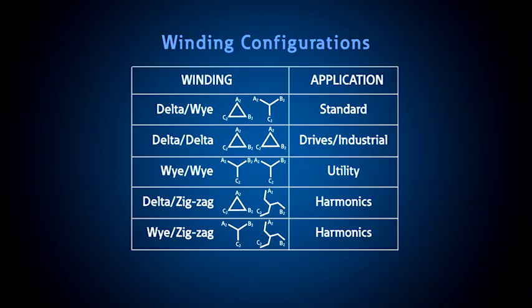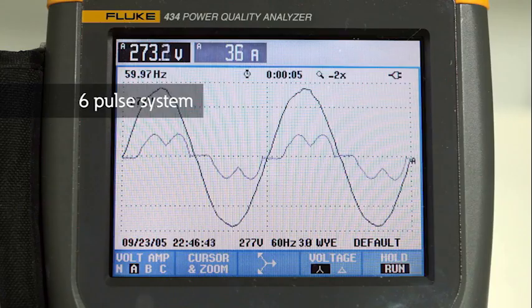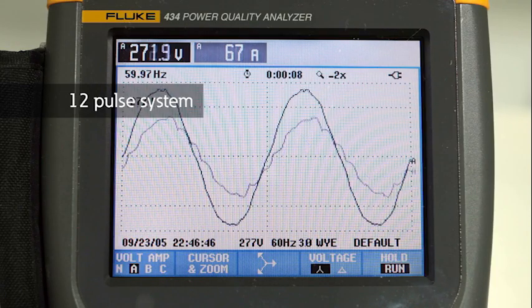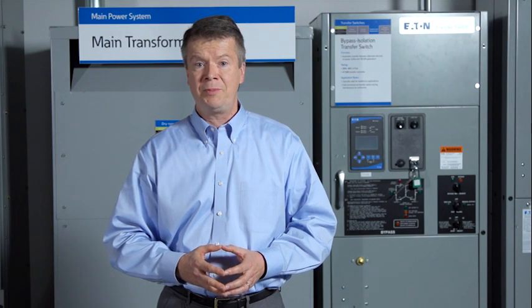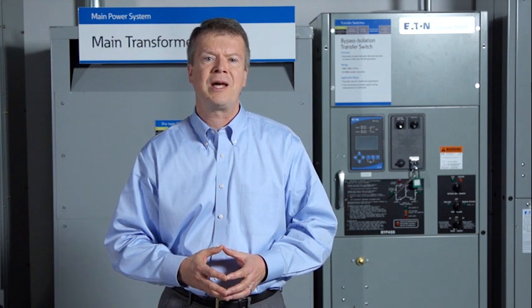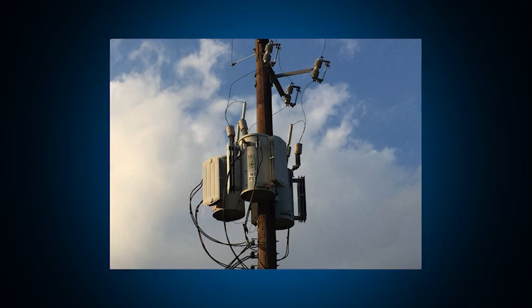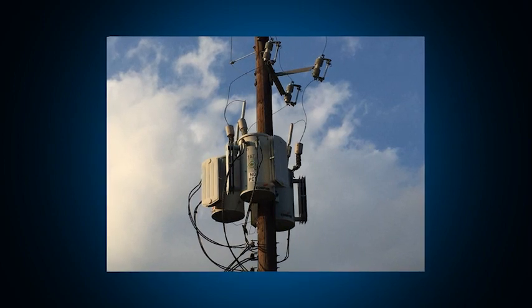The winding configurations for three-phase transformers are numerous, but the most common ones are delta-Y, delta-delta, and Y-Y. For harmonic applications, delta zigzag and Y zigzag are also common. Combinations of different windings are often used with variable frequency drives to do phase cancellation for harmonic mitigation. Delta-Y transformers are typically used at the service entrance for re-establishing a new grounding system on the customer side of the utility service. Pole mounted transformers are typically single phase or split phase, but can be banked into sets of three and configured with delta-Y or Y-Y configurations.